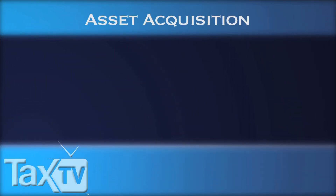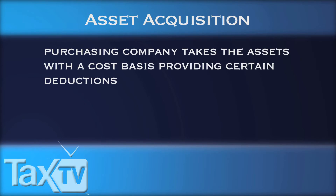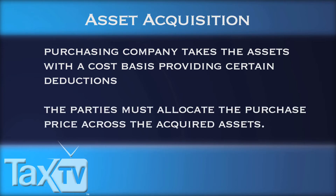On the other side of the asset transaction, the purchasing company takes the assets with a cost basis, providing certain deductions such as depreciation or amortization of purchase price. As a result, the parties must allocate the purchase price across the acquired assets. The parties generally agree on how the purchase price will be allocated, filing a form with the IRS. The shareholders of the target company would only recognize gain or loss on their stock upon liquidation of the target company.